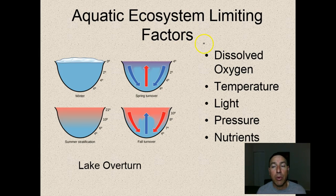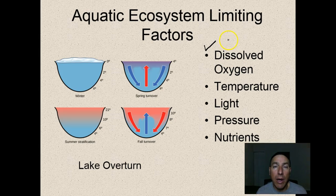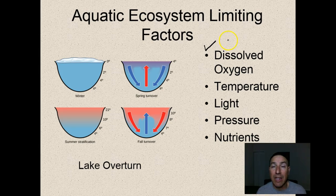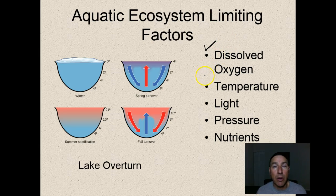Aquatic ecosystems have a lot of limiting factors. One of the most important is dissolved oxygen. In the atmosphere we don't have to worry about dissolved oxygen because it's all around us. However, in aquatic ecosystems dissolved oxygen has to diffuse into the water or be put in there by plants. In many deep places there's not enough light for plant life, so oxygen is usually at a premium.